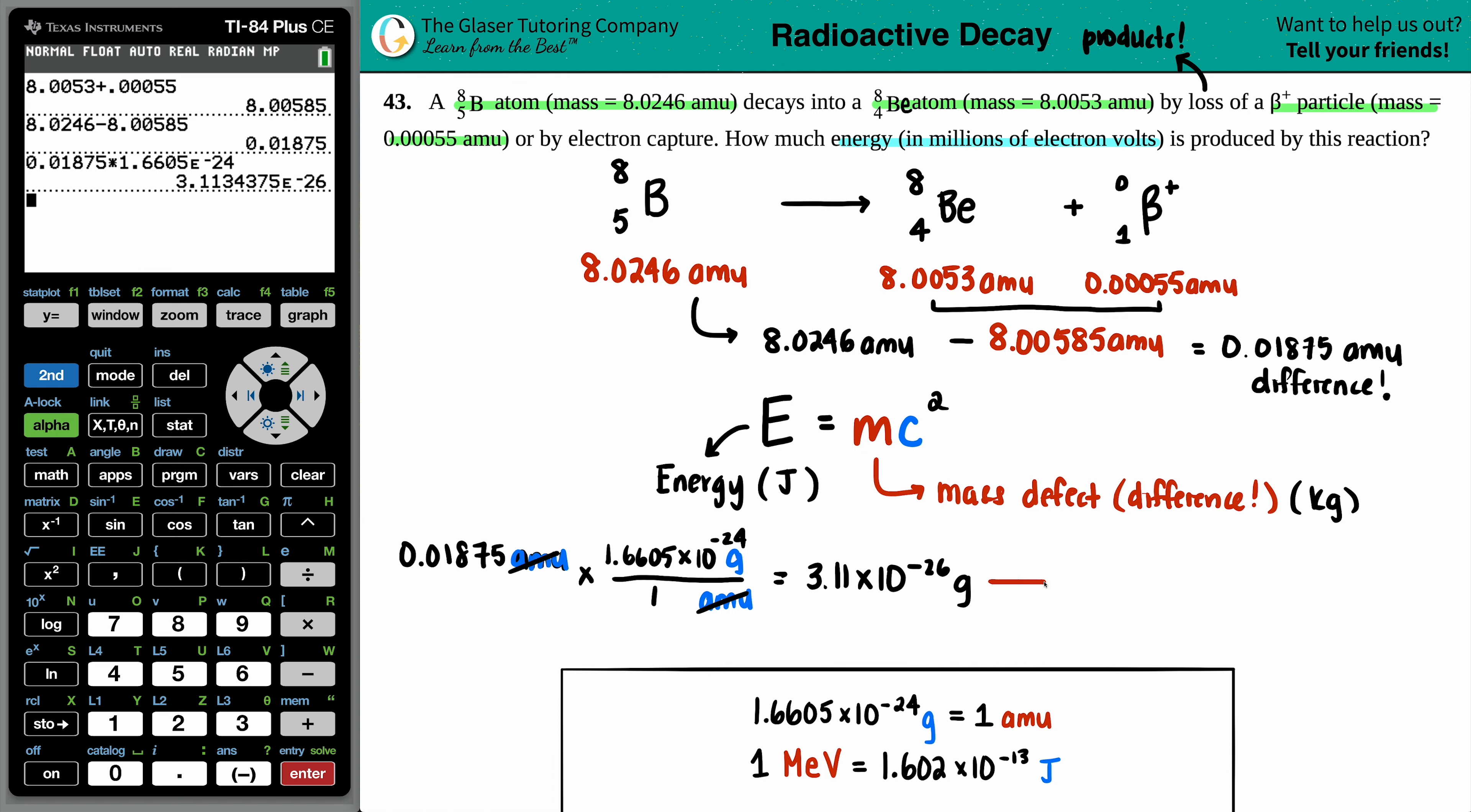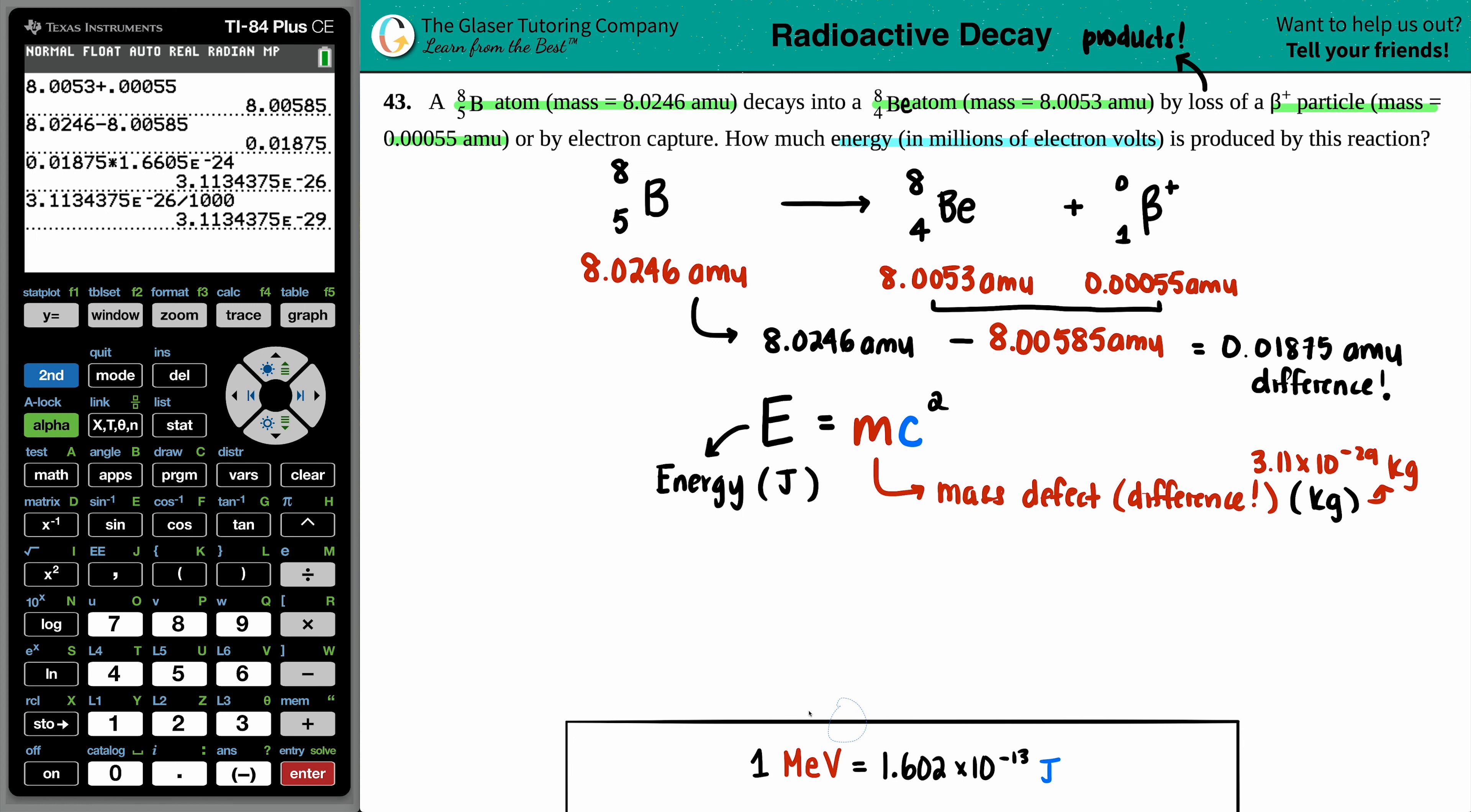Now if I want to get into kilograms, grams to kilograms, all I got to do is divide by 1,000. Either move the decimal place or do something with that exponent. 3.11 times 10 to the negative 29th kilograms. That's the value here. When I do my calculation, I'll use the full number that's in the calculator. I'm just going to get rid of this because we need to do more math.